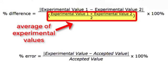difference, on the bottom, you put the average of the two experimental values. For percent error, you put the accepted value on the bottom. It's always the thing that we think is most accurate on the bottom.